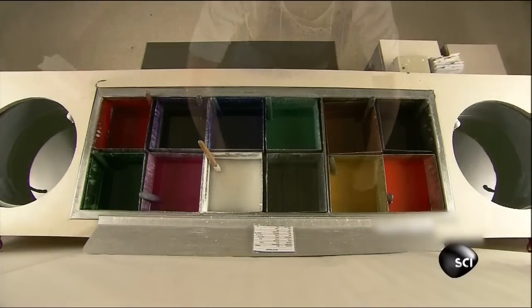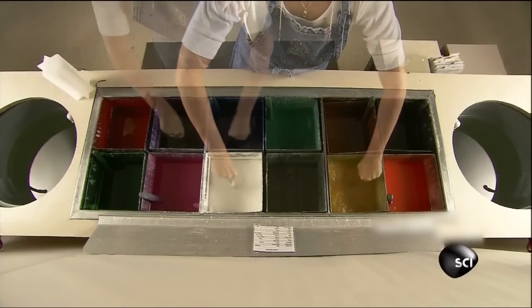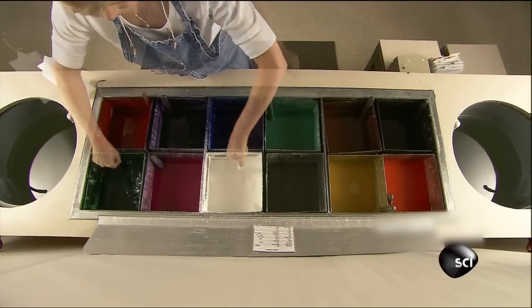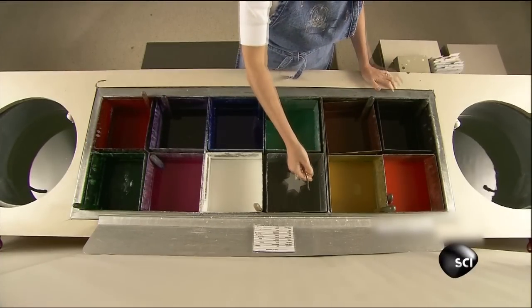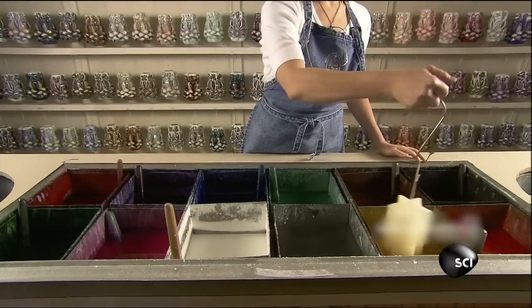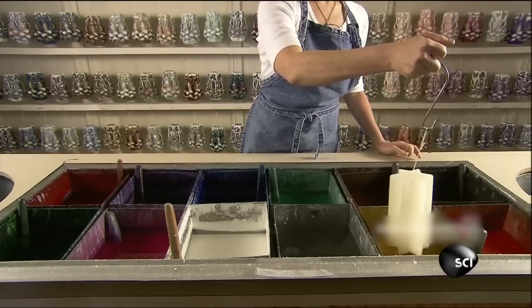The process starts with vats of hot wax in various colors. The candle maker stirs them to circulate the specially formulated dyes. She dips a star-shaped wax core into clear wax and then yellow. The clear wax dilutes whatever color wax follows it.